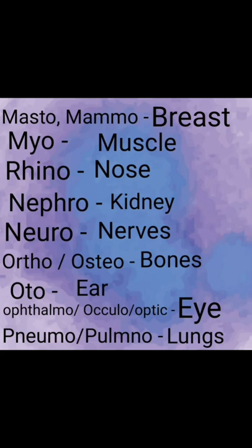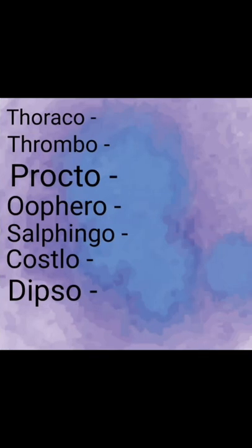Review: masto is breast, myo is muscle, rhino is nose, nephro is kidney, neuro is nervous system, osteo is bone. Next is thoraco, meaning chest. Next is thrombo — thrombosis means a blood clot.